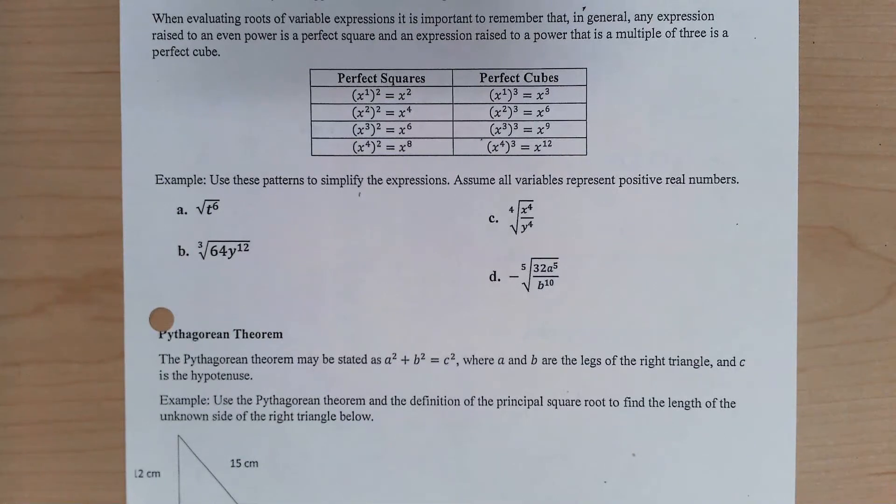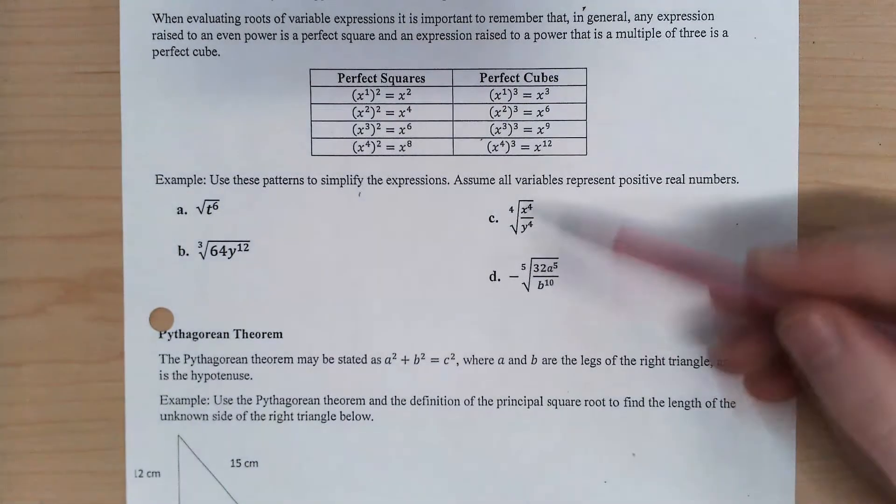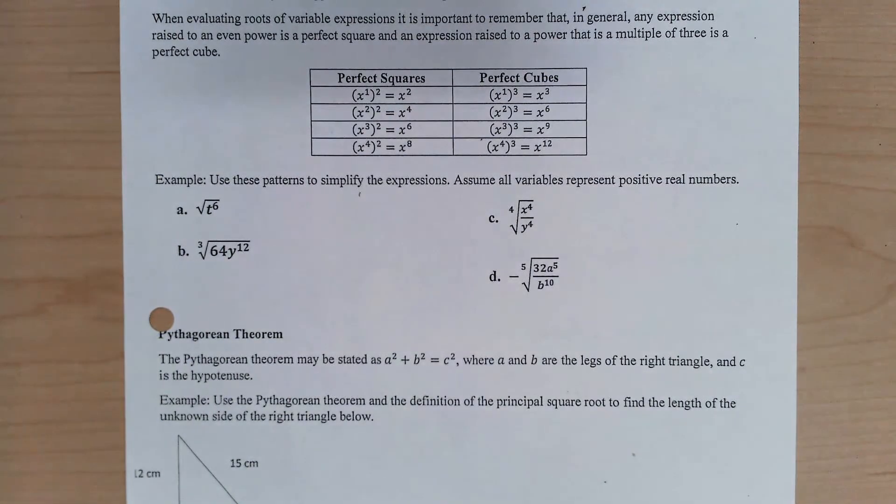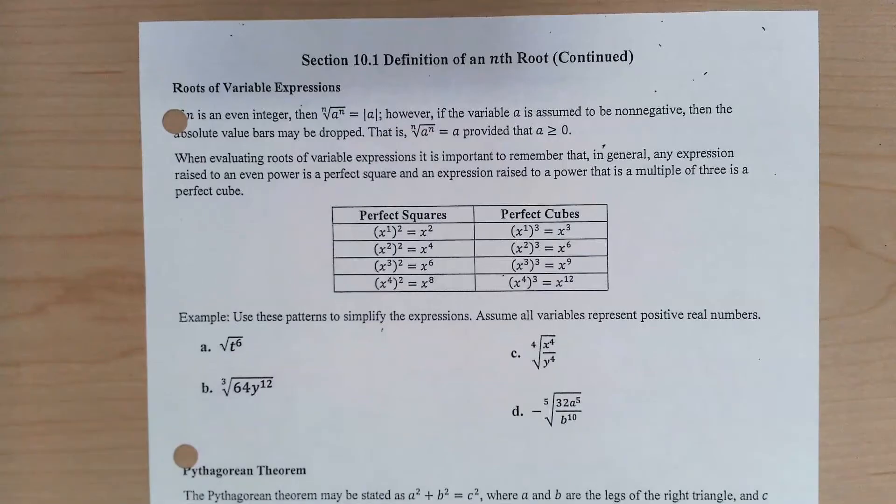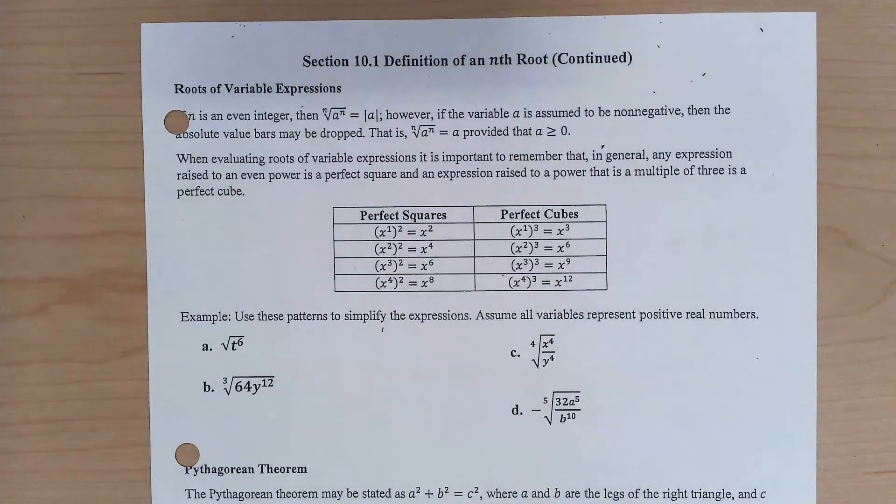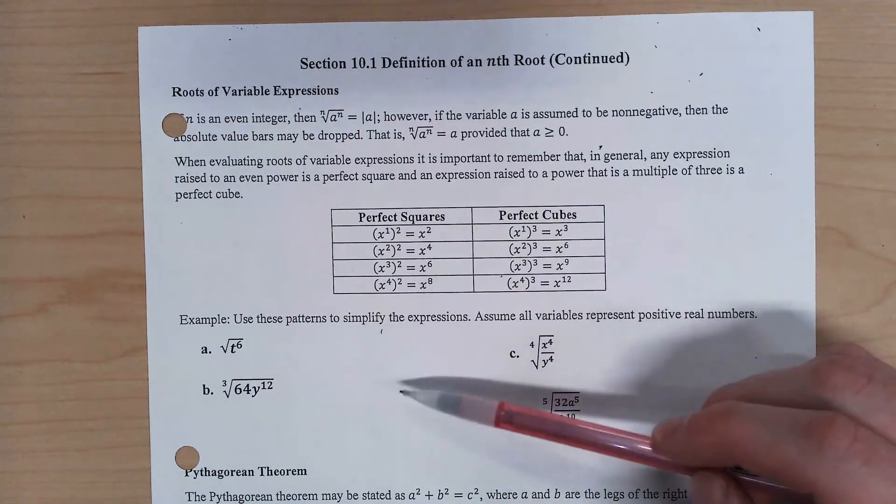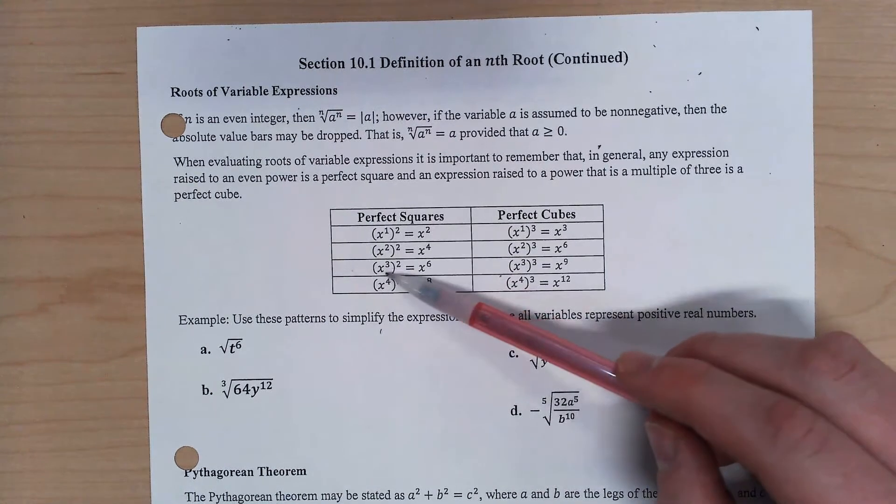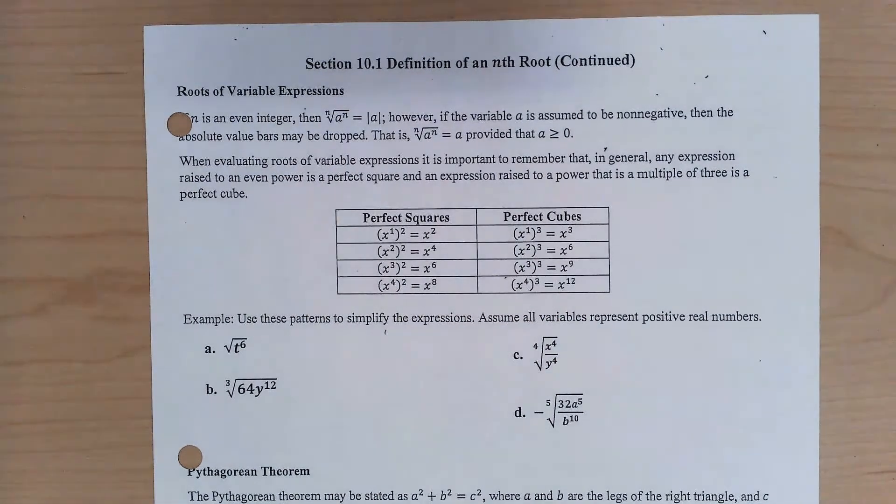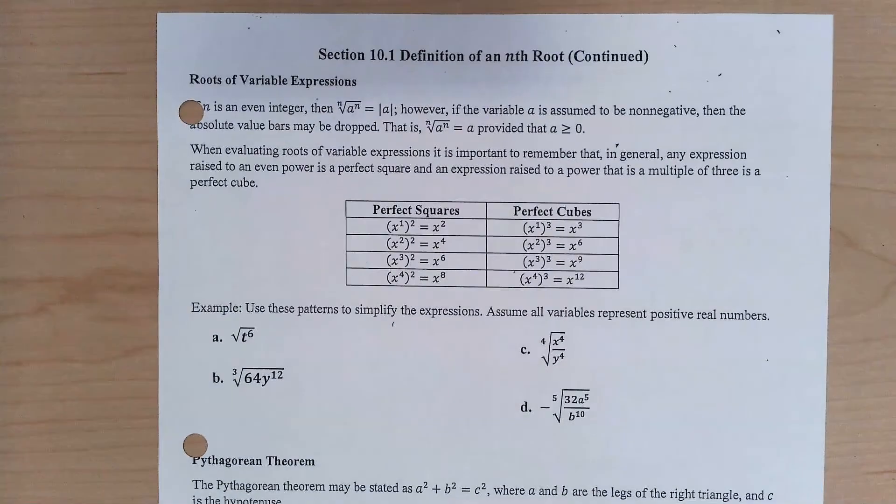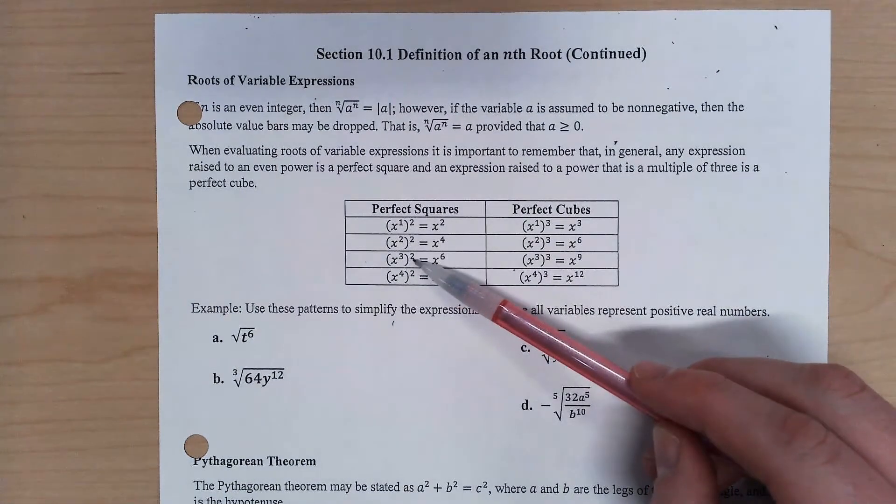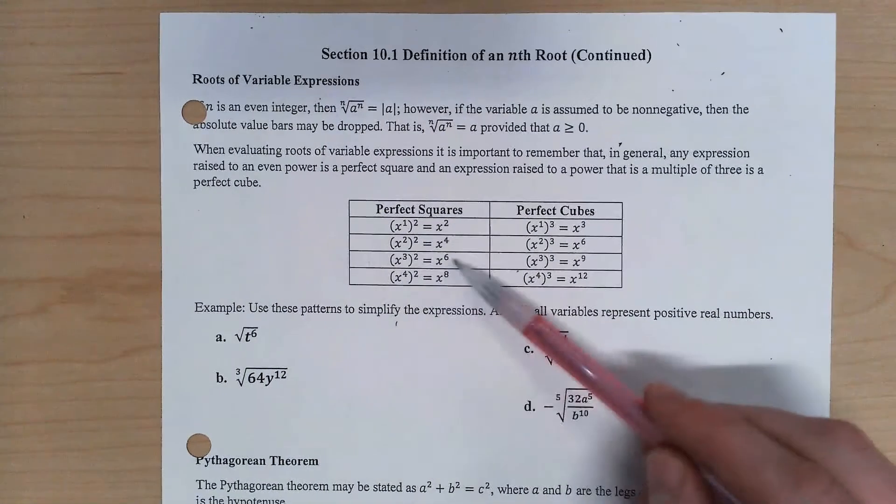To finish up 10.1, we're going to explore some of the simplification that we can do with our square and cube roots, mostly. We'll still touch on some of the others as well. So I talked about how we can get kind of creative with our exponents here. We know that something raised to a power raised to another, we can multiply those powers to simplify.